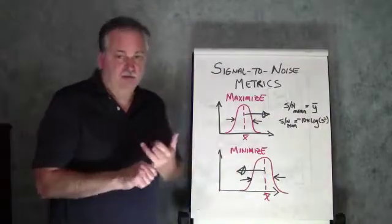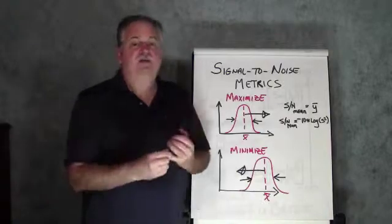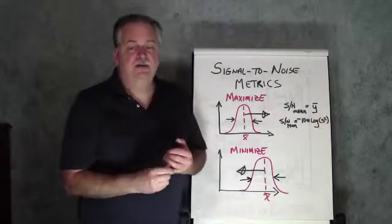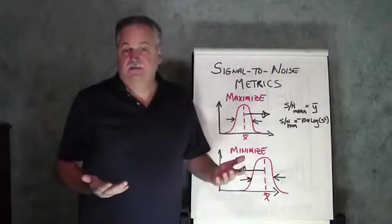They may also have an influence on shifting the average value, but the key thing is here, we can find the factors that are going to reduce the variability. So, this formula is minus 10 times the log of the standard deviation squared. So, you're going to need multiple data points per experiment run to be able to calculate that metric, because we calculate that for each experimental condition, and then we use that calculated value to do our analysis of variance.